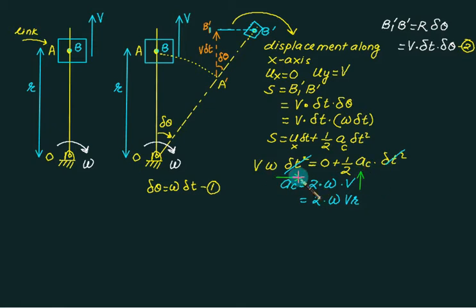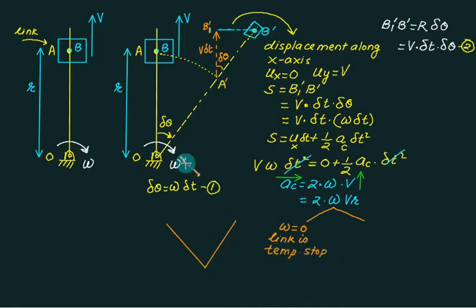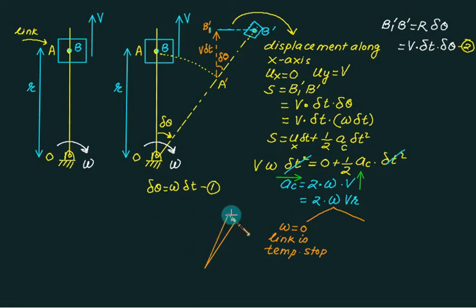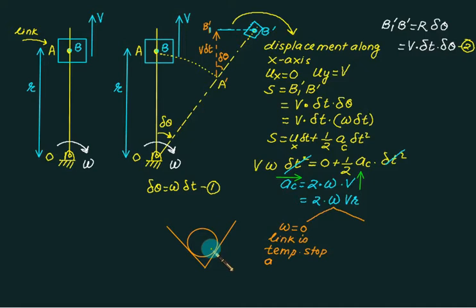The velocity vector v and acceleration vector a_c are always perpendicular to each other. a_c depends on two quantities. If the link is fixed, a_c equals zero. Recall the shaper mechanism: the link oscillates between two extreme positions. At an extreme position, the link stops temporarily and has no angular velocity, so the Coriolis component equals zero. In the second situation, if v_r equals zero, then the Coriolis component is also zero.